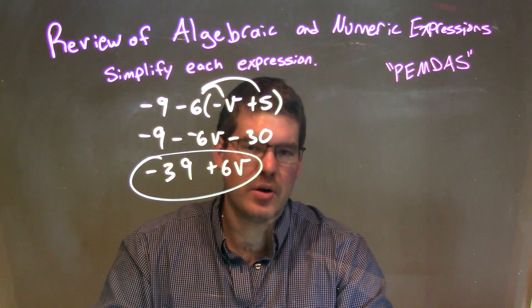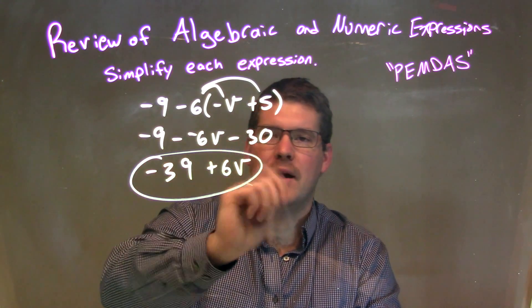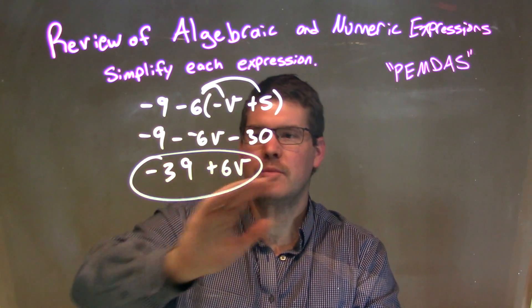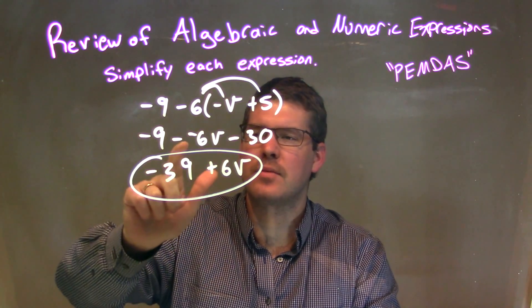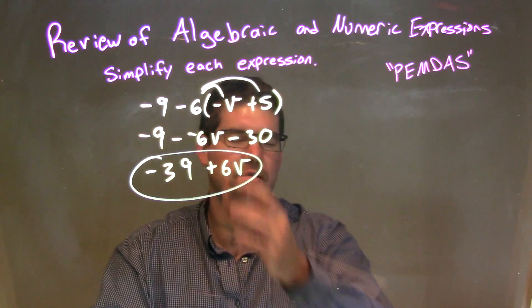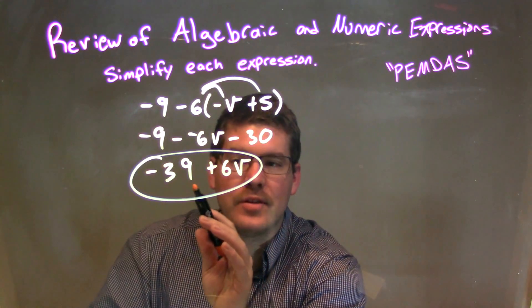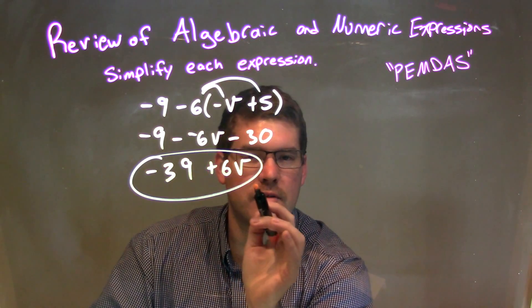We're going to simplify and combine our like terms. Negative 9 and minus 30 are like terms, so both numbers combined to be negative 39. And then, subtracting a negative 6v is the same thing as adding a positive 6v. So, our final answer here is negative 39 plus 6v.